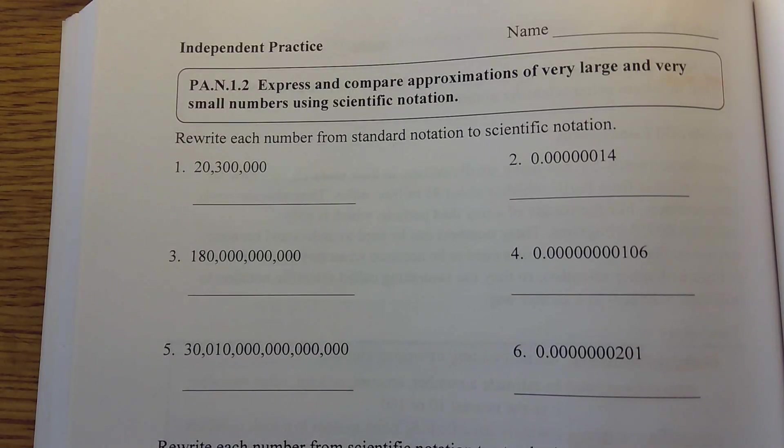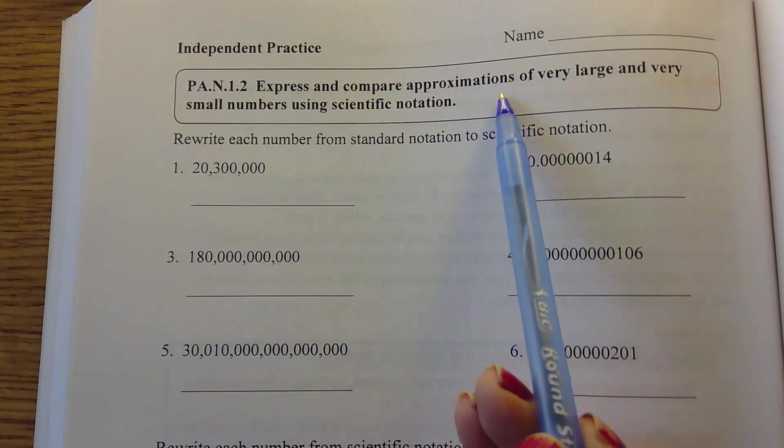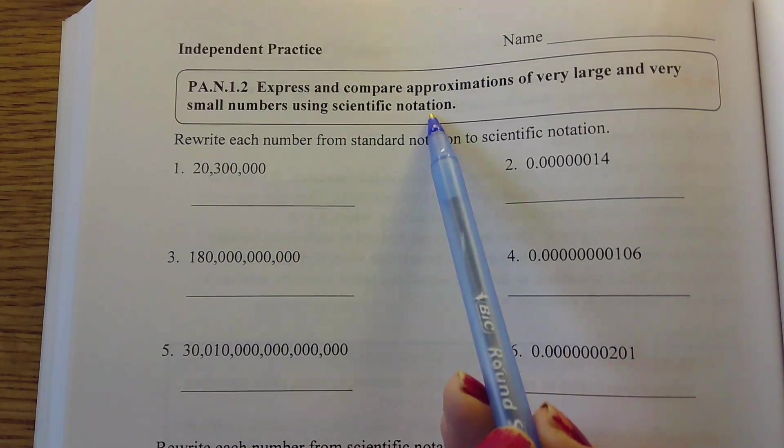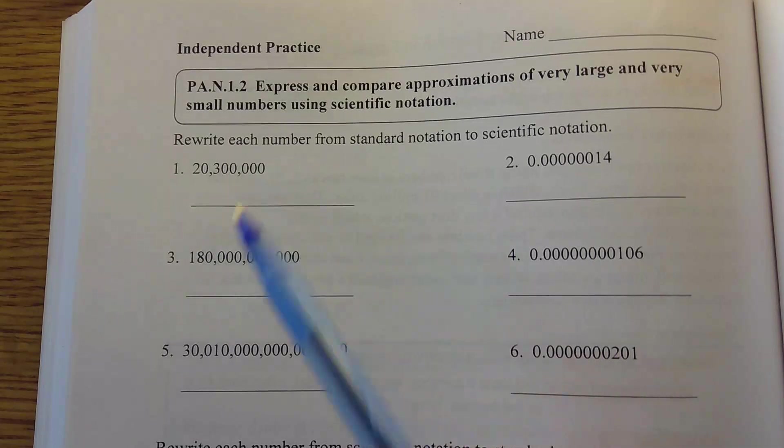We're going to look at the top of page 194 and express and compare approximations of very large and very small numbers using scientific notation. Number one, we're rewriting each number from standard notation to scientific notation.